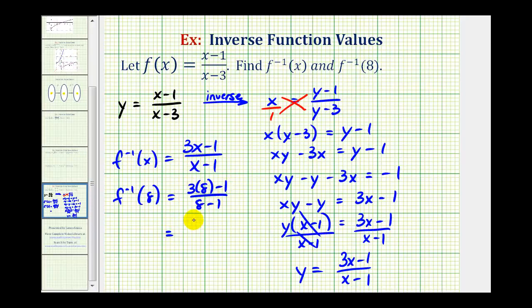24 - 1 = 23, and 8 - 1 = 7. So f^(-1)(8) = 23/7.